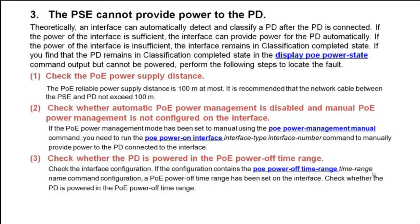If the PSE detects the PD but the PD still cannot be powered, run the display PoE power state command. The command output shows that the PD remains in classification completed state. Perform the following steps to locate the fault. 1. Check the PoE power supply distance. PoE reliable power supply distance is 100 meters at most. Ensure that the network cable between the PSE and PD does not exceed 100 meters. 2. Check whether automatic PoE power management is disabled and manual PoE power management is not configured. If the mode has been set to manual, run the PoE power on interface command to manually provide power to the PD.